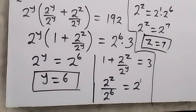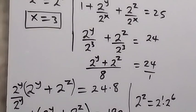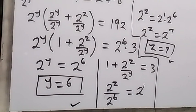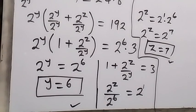So the conclusion is: x equals 3, y equals 6, and z equals 7. We can check whether this solution satisfies the original problem. Thank you for watching — please share this video and subscribe to my channel. See you in the next class, bye for now.